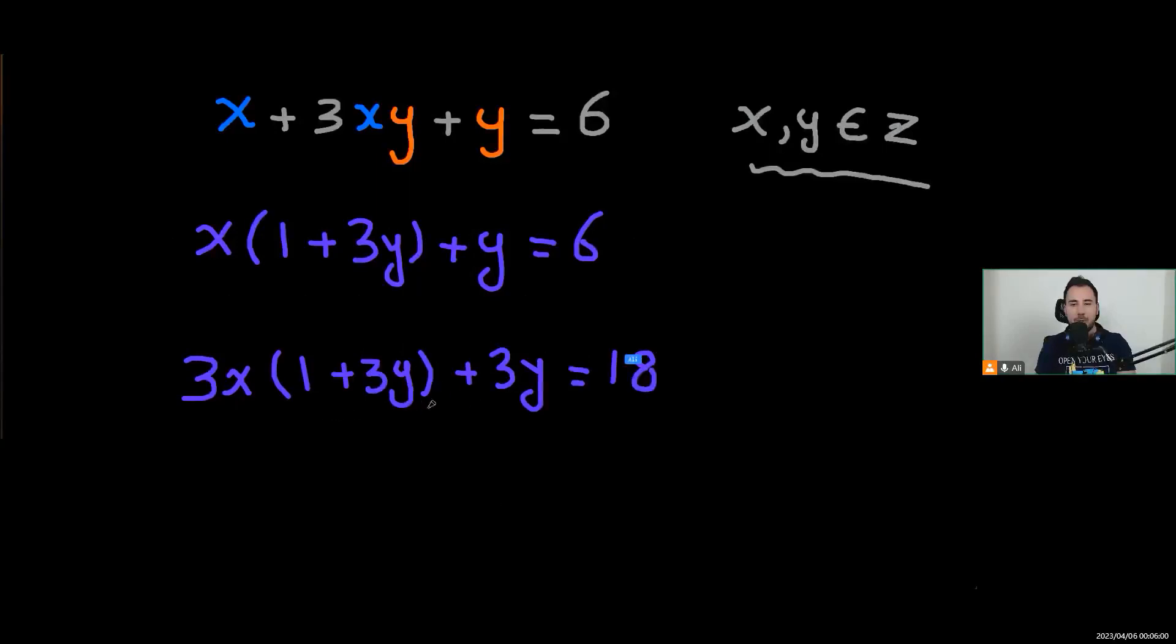Now, you see it's almost there. What if I add plus 1 to both sides of the equation? Then we'll have 3x times 1 plus 3y, 1 plus 3y. And the good thing will happen shortly: 3y plus 1 equals 19.